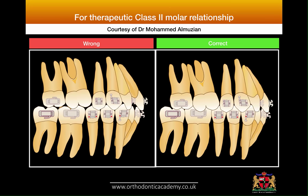Secondly, what is my bracket positioning if I am going to end in a therapeutic Class 2 — i.e., when I extracted two premolars in the upper arch? If you place the molar tube in the same way as in a Class 1, where you see more of the distobuccal cusp than the mesiobuccal cusp, then when you align the teeth you will get gaps between the mesiobuccal cusp of upper six and the embrasure between lower five and lower six, and you will see a lot of dead space between the upper and lower cusps.